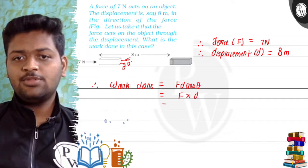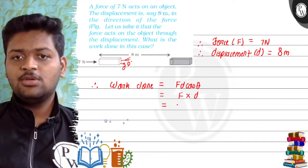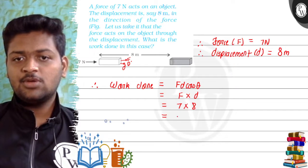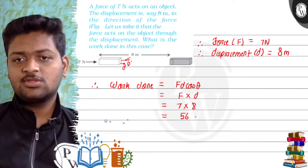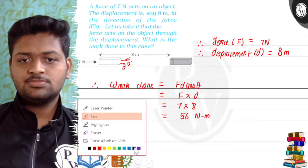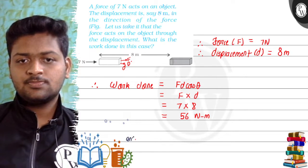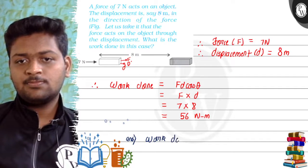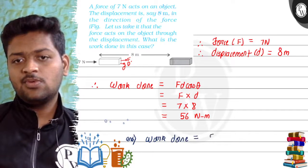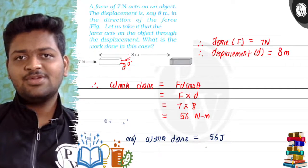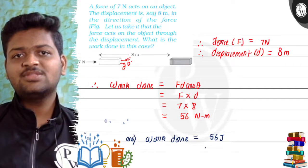Work done is equal to force into displacement. Force is 7 Newton and displacement is 8 meters. That is equal to 56 joules. Okay, so this is our final answer to the question. I hope you understood the question. Thank you so much.